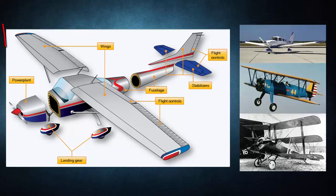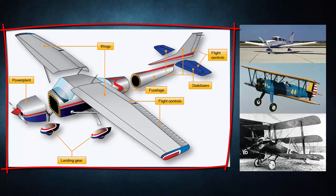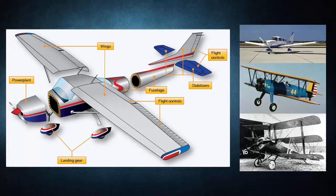The airframe of a fixed-wing aircraft consists of five principal units: the fuselage, wings, stabilizers, flight control surfaces, and landing gear. Helicopter airframes consist of the fuselage, main rotor and related gearbox, tail rotor, and landing gear. Airframe structural components are constructed from a wide variety of materials. The earliest aircraft were constructed primarily of wood; steel tubing and aluminum followed. Many newly certified aircraft are built from molded composite materials such as carbon fiber.